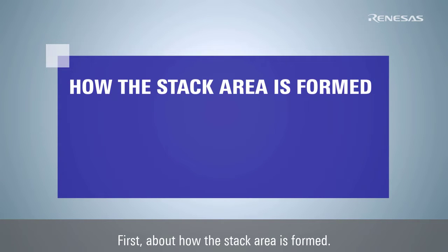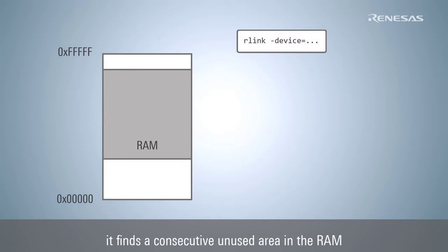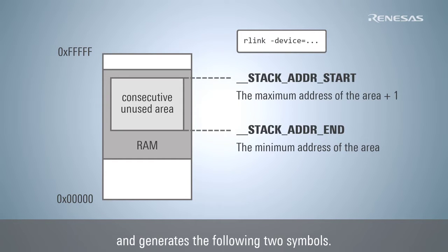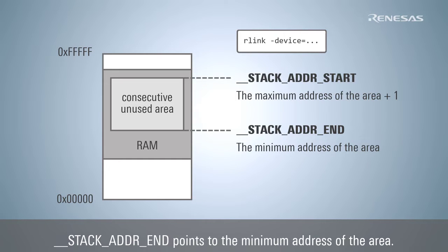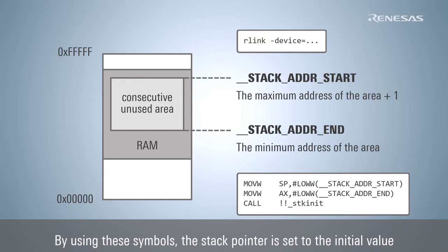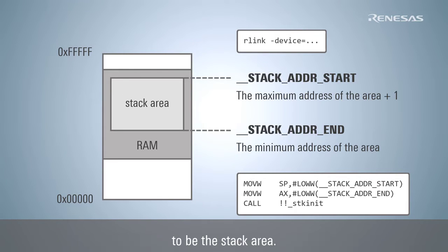First, about how the stack area is formed. If the device option is specified for the linker, it finds a consecutive unused area in the RAM based on the information in the device file and generates two symbols: stack address start, which points to the maximum address of the area plus one, and stack address end, which points to the minimum address of the area. By using these symbols, the stack pointer is set to the initial value and the stack area is initialized in the startup routine. This makes the consecutive area that the linker finds become the stack area.